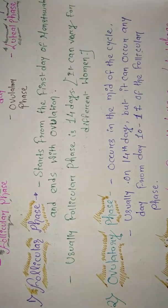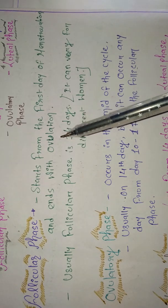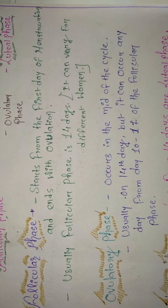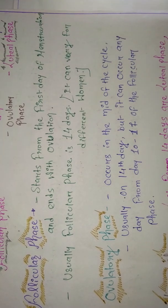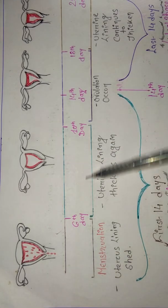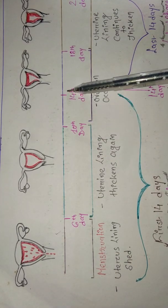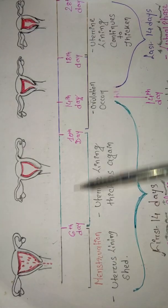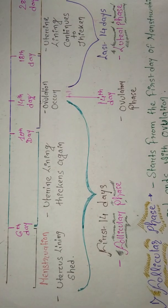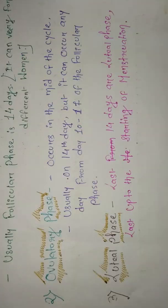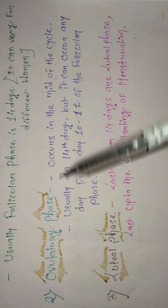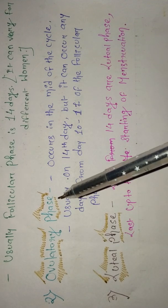The follicular phase starts from the first day of menstruation and ends with ovulation. Menstruation continues for about six days, then the endometrium forms again, and on the 14th day ovulation occurs — this whole period is called the follicular phase. Usually the follicular phase is 14 days, but it can vary between individuals.